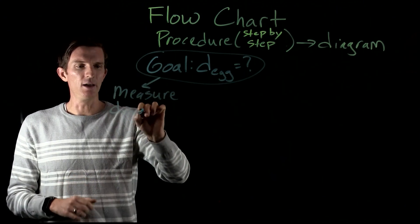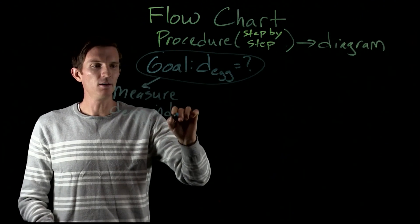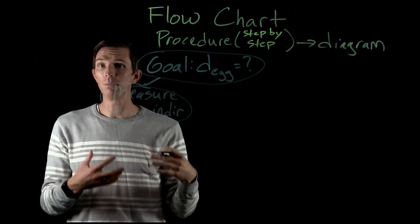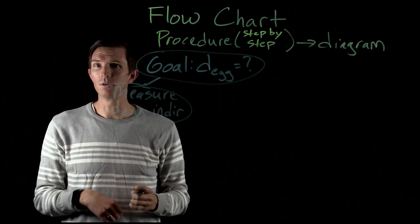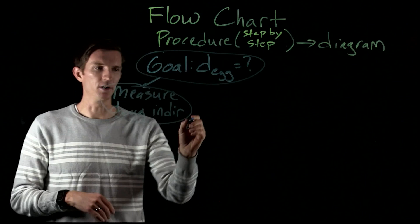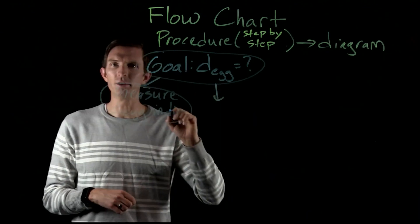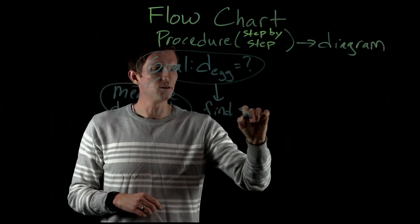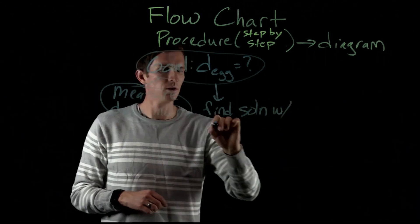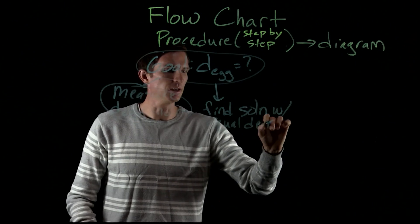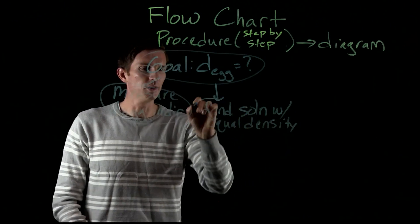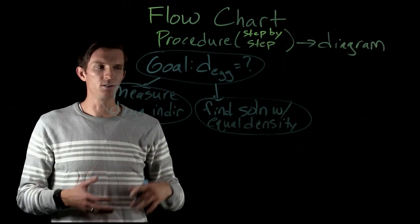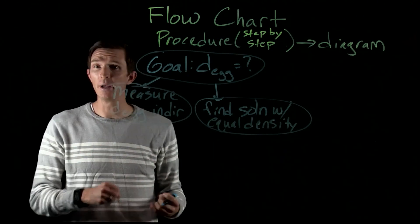What we're going to do is we are going to measure the density of the egg indirectly. So we're going to measure the density by determining the density of something other than the egg, but that we know is equal to the density of that egg. Well how are we going to do that? We are going to find a solution with equal density to the density of our egg. Obviously it's not easy just to go and find solutions like this, but we're going to make a solution.